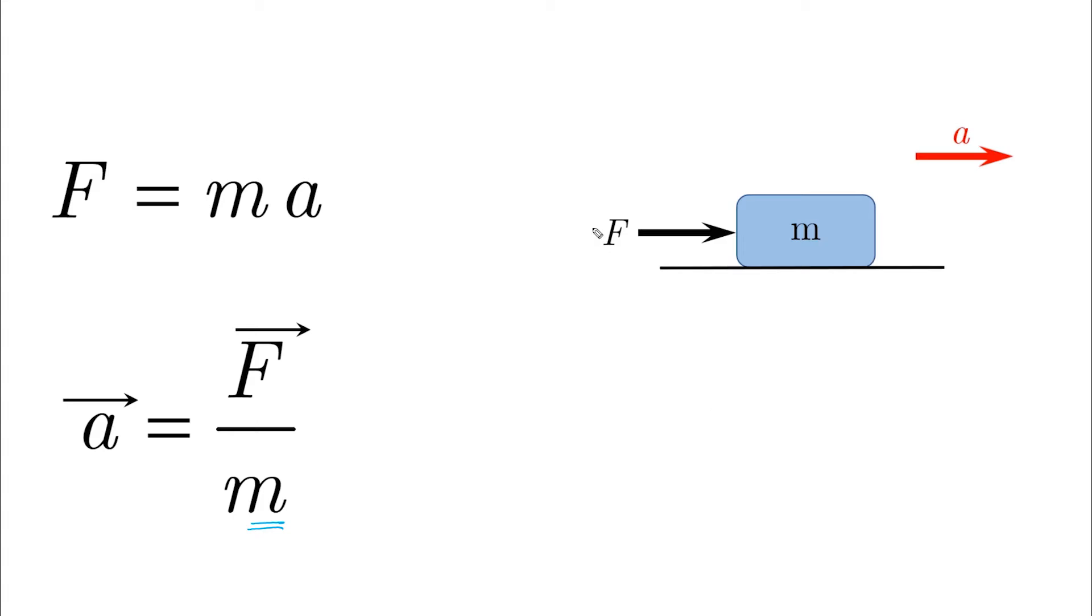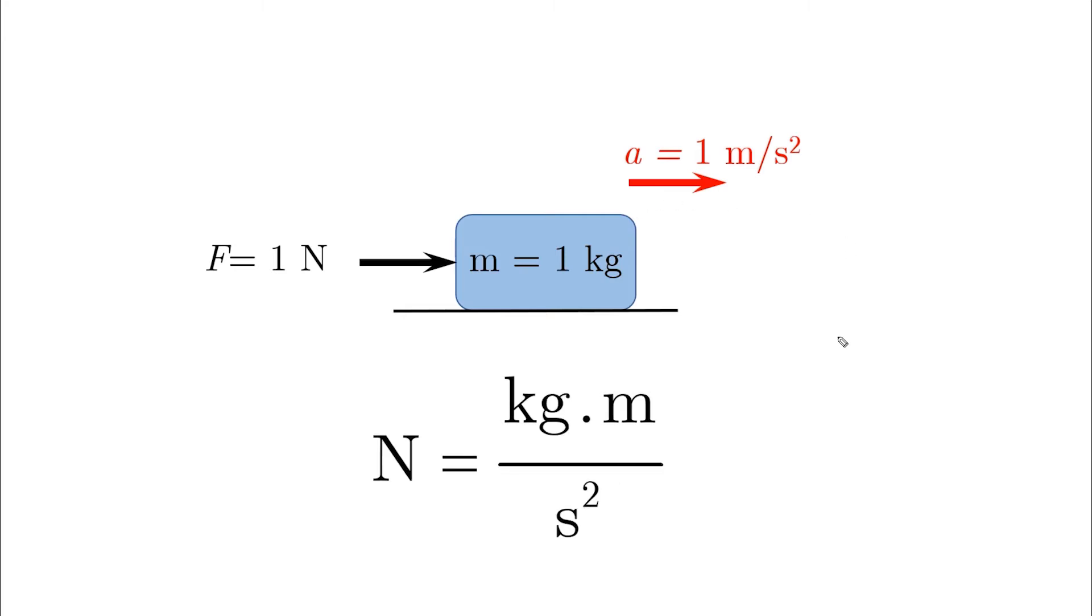If you apply a force on a mass, the mass will accelerate in the same direction of the force. So if you apply a one Newton force on a one kilogram mass, it will accelerate with one meter per second squared, which leads to the definition of Newton in the SI unit. One Newton is equal to one kilogram times meter per second squared.